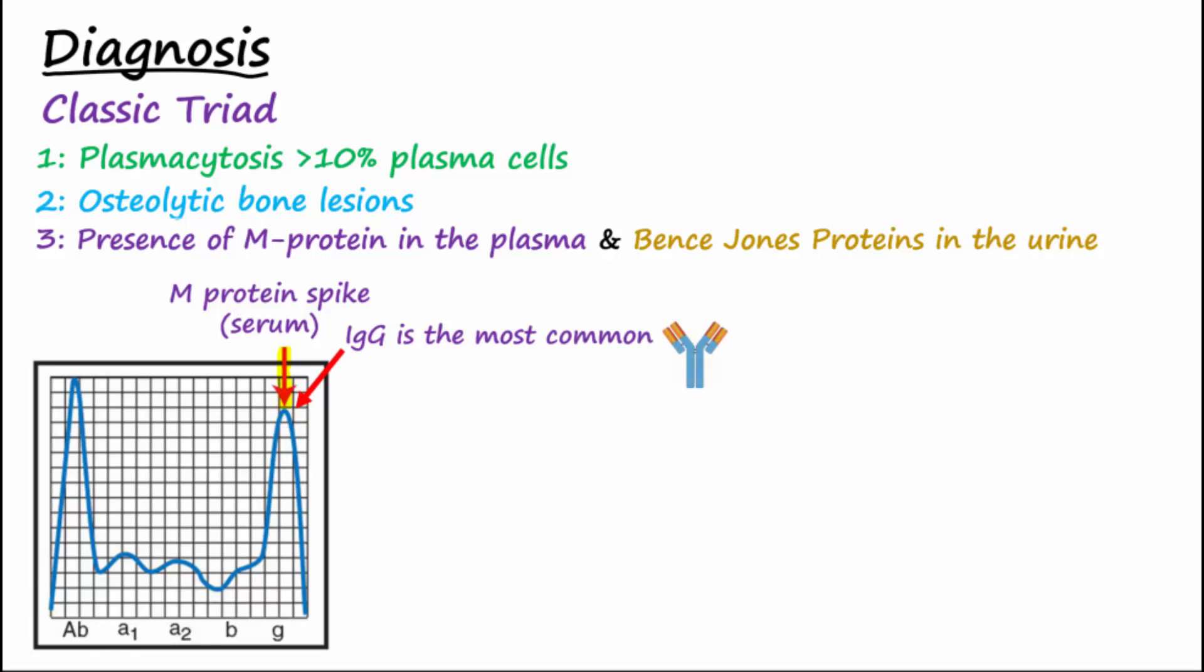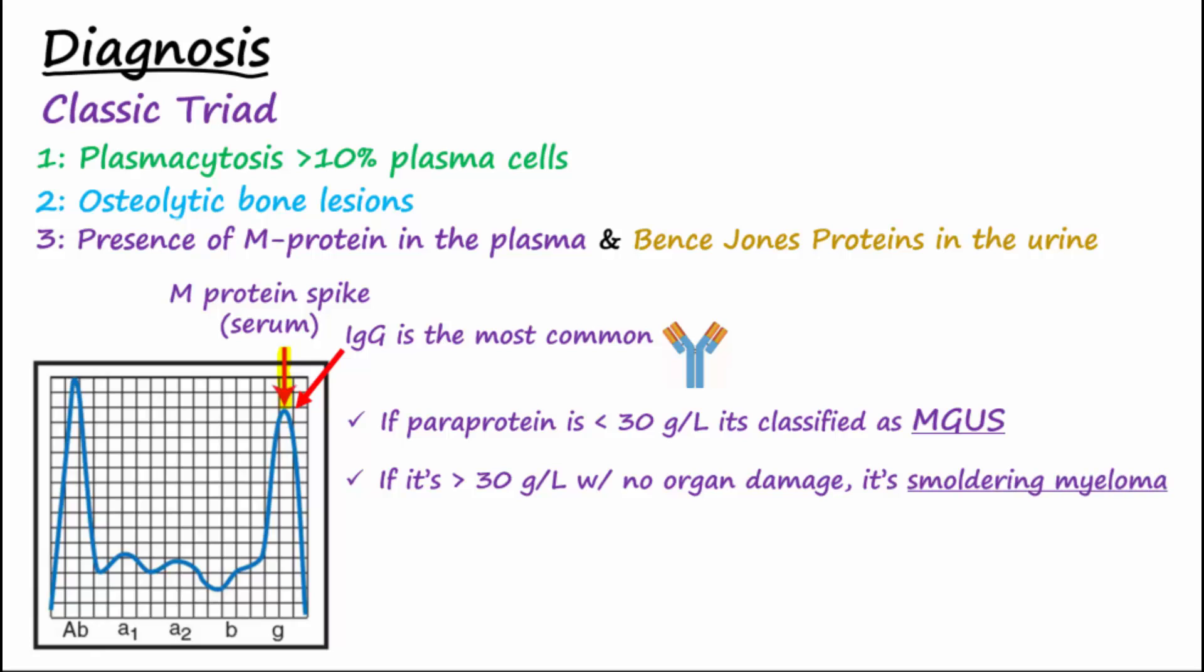If paraprotein is less than 30, it's classified as MGUS. If it's more than 30 with no organ damage, it's smoldering myeloma. If it's greater than 30 with organ damage like kidney failure, anemia, bone lesions, or hypercalcemia, it's multiple myeloma.